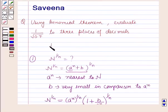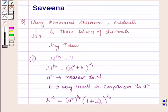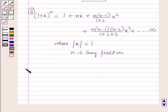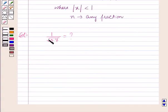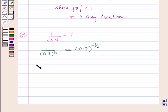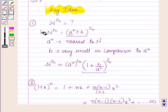These results will work as a key idea for solving this question, and now we will start with the solution. Here we have to evaluate 1 over root 0.7. This can be written as 1 over 0.7 raised to power 1 by 2, which further equals 0.7 raised to power minus 1 by 2. Now 0.7 can be written as 1 minus 0.3, so we have (1 minus 0.3) whole raised to power minus 1 by 2.